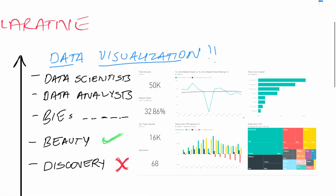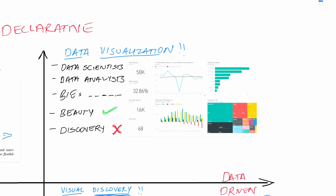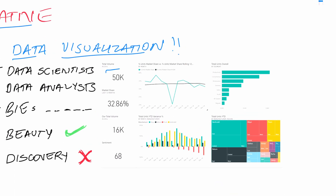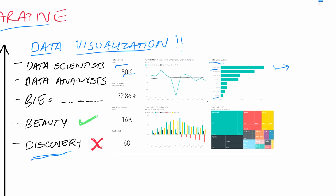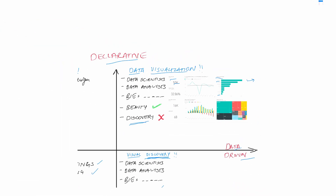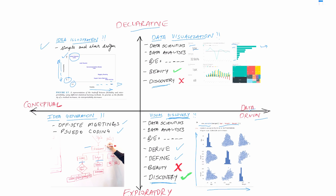The last quadrant is data-driven declaration — this is where dashboard visualizations come in. You're declaring something to leadership: for example, 'total volume is 50,000.' Discovery is less important here; beautification is more important. This is where visualization experts come in with all types of graphs. The sequence is: idea illustration, then idea generation, then visual discovery, then data visualization.